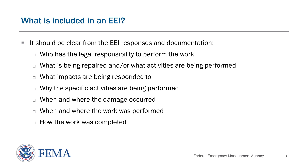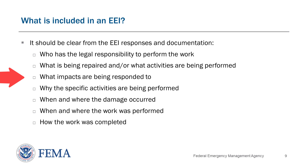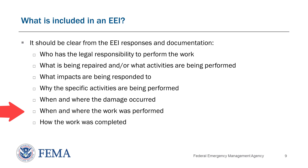Make sure that your EEI responses and documentation support the who, what, why, when, where, and how of everything being claimed. It should be clear who has the legal responsibility to perform the work, what damage is being repaired or what activities were or are being performed, and for emergency activities, what impacts you're responding to. For example, if you're responding to a hurricane, this could be things like preventing floodwaters from entering a building or evacuating survivors from wind-damaged facilities. Be able to show why specific activities were performed as opposed to others, when the damage and work occurred, and where it occurred — provide precise locations with addresses and GPS coordinates. How was the work completed? For example, did you use contractors or force account labor?